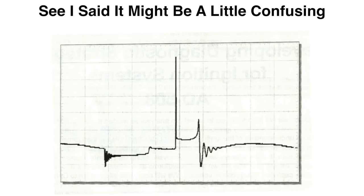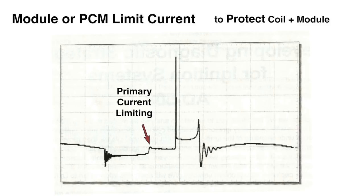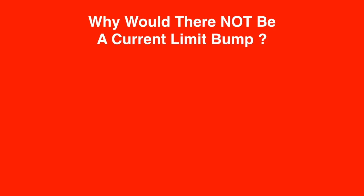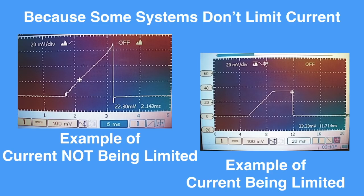The primary current limiting is next, if there is current limiting. The module or PCM limits current to protect the coil in the module. Why would we not see a current limit bump? Because some systems don't limit current. The left one is an example of current not being limited — you can see the peak going up. The right one is current being limited, so the peak cannot reach all the way to the top. Know your system before you condemn it.